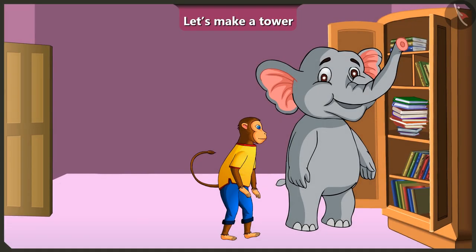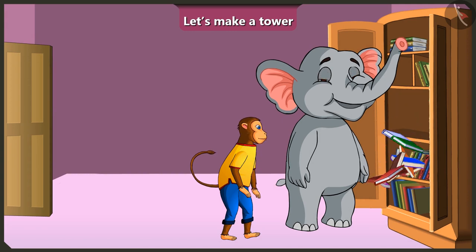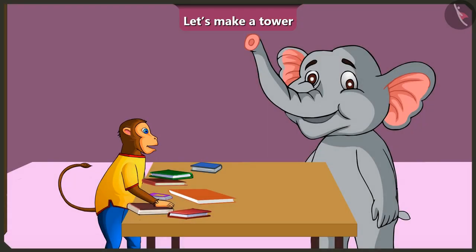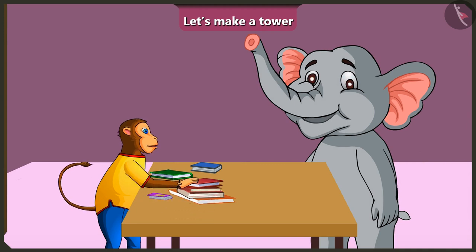Appu, you are placing the smaller books at the bottom and big books on the top every time. That is the reason it's happening. See Appu, the tower will remain stable only if you place big books at the bottom and small books on top of that.